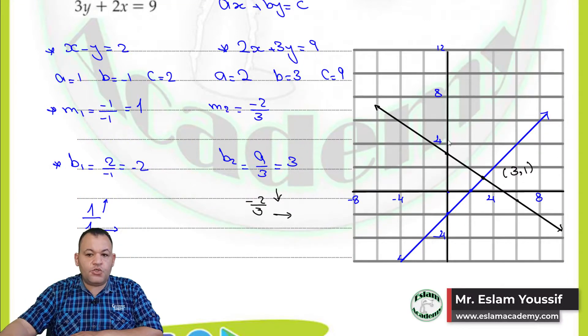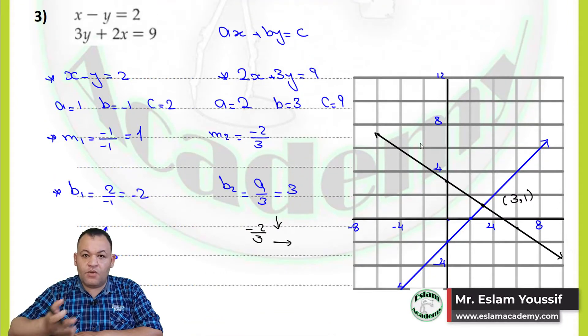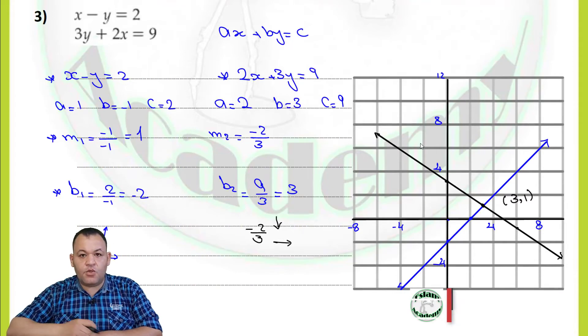If you substitute x equals 3 and y equals 1 into both equations, you will find that the left-hand side equals the right-hand side, confirming the solution.